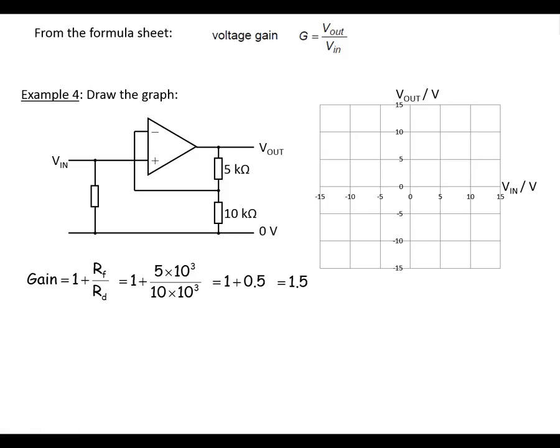So how are we going to draw the graph? What you want to do is pick a nice easy point. So 5 volts is particularly easy on this one. When the input is 5 volts, the output is going to be 1.5 times bigger, so it'll be 7.5 volts. So we plot that point there.